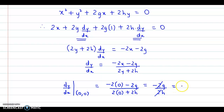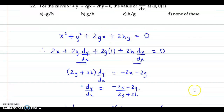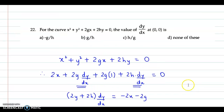We cancel out the 2, so the final answer is minus g upon h. Verifying with the options, the correct answer is option A.